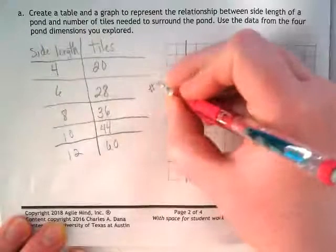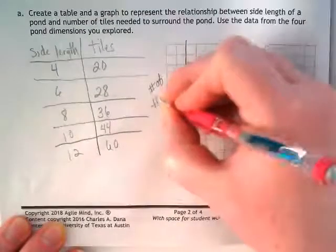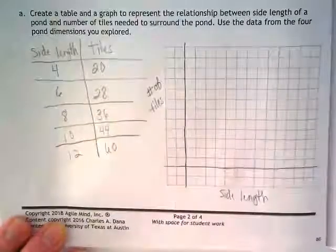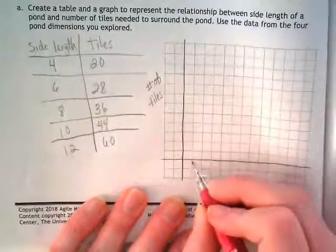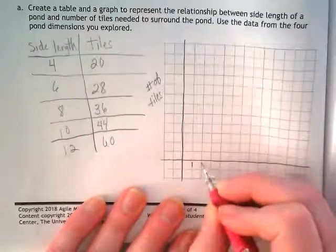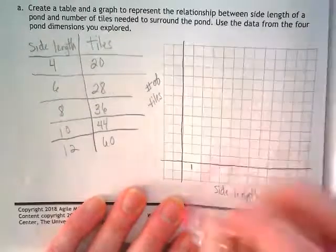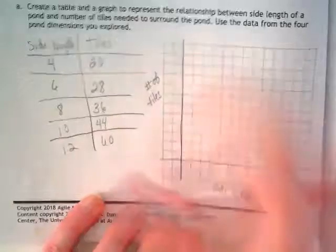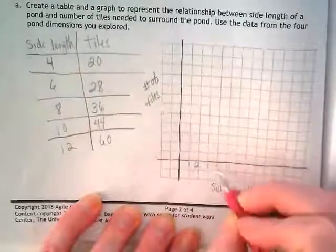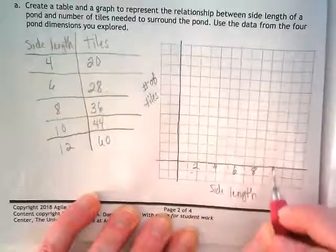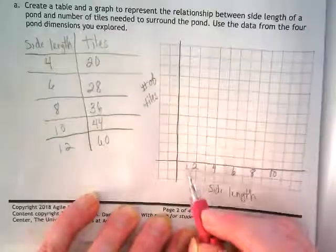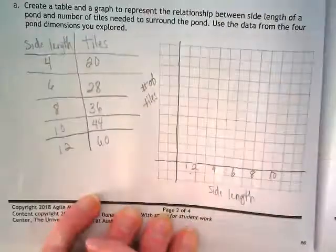Okay, so going up the side we have our number of tiles. We're going to number this by 2, 4, 6, 8. I went ahead and skipped the odds and just put the evens.